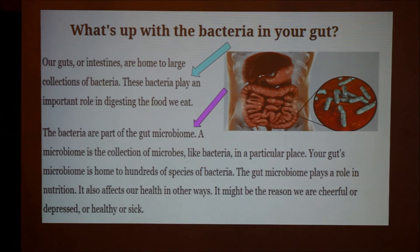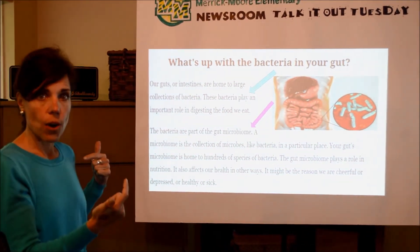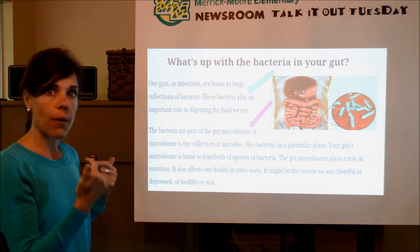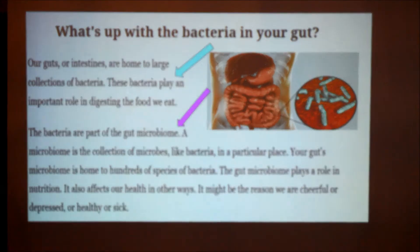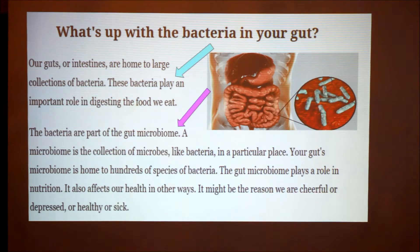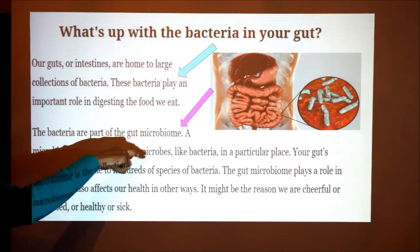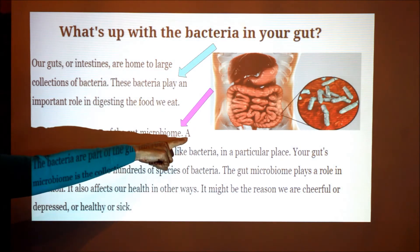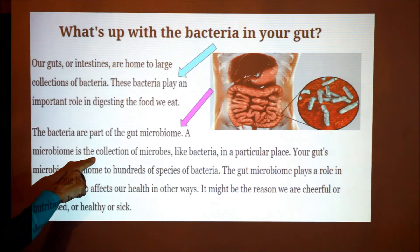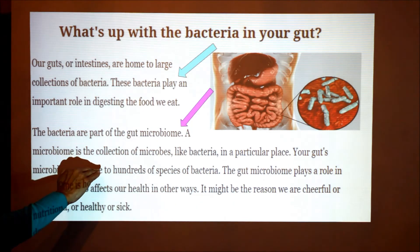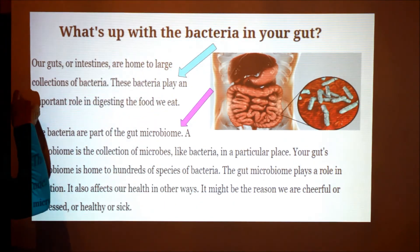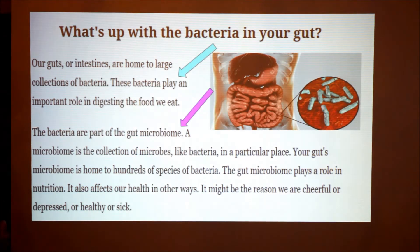I'm going to model for you how I think through this, and you're going to do the same thing on your own during your assignments. Our goal right now is for you to see how a reader really thinks through tricky words and ideas. 'What's up with bacteria in your gut? Our guts, or intestines, are home to large collections of bacteria. These bacteria play an important role in digesting the food we eat. The bacteria are part of a gut microbiome.' The writer gave us a really big unfamiliar word, but then watch — 'A microbiome is the collection of microbes, like bacteria, in a particular place.' The writer gave us the word and then defined it. In this first paragraph, the writer told us what big idea they wanted to teach us about in the rest of the article.